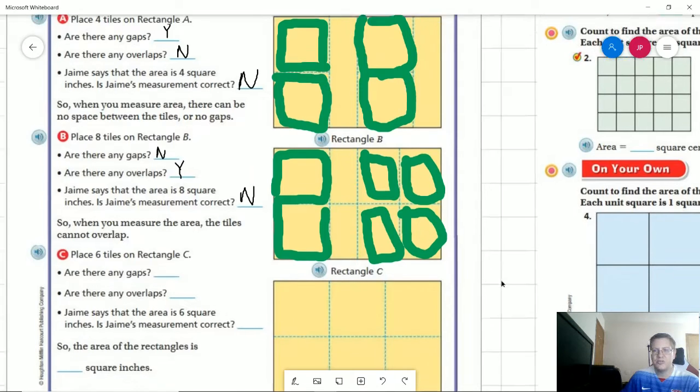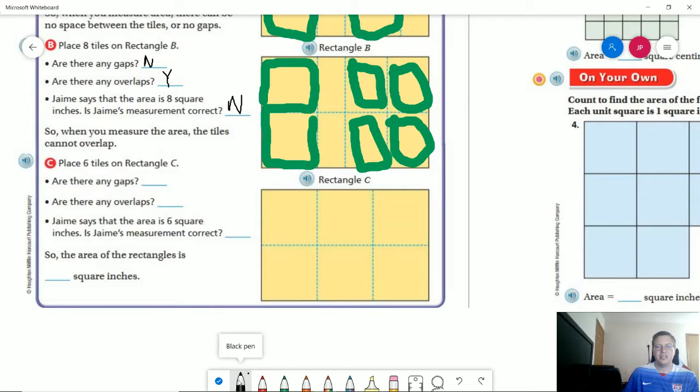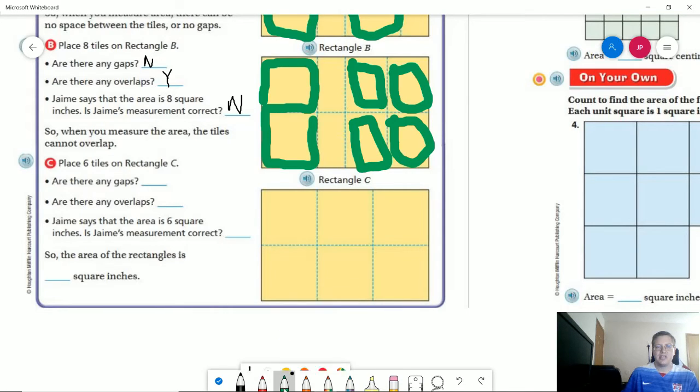And that means that eight would not be the measurement for that because we don't have a situation where we don't have gaps or overlaps. So the last one we have six and it looks like that all six of these are the same size. Would there be any gaps if I did this? Let's actually go back to our green one real quick. So here's one, two, three,